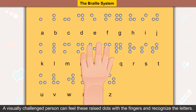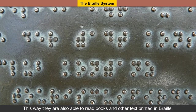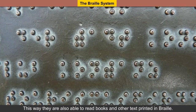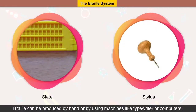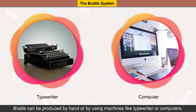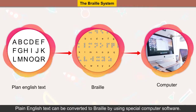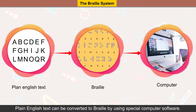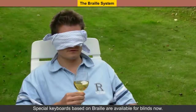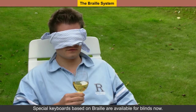A visually challenged person can feel these raised dots with their fingers and recognize the letters, enabling them to read books and other text printed in braille. Braille can be produced by hand or by using machines like typewriters or computers. Plain English text can be converted to braille using special computer software, and special keyboards based on braille are available for blind people.